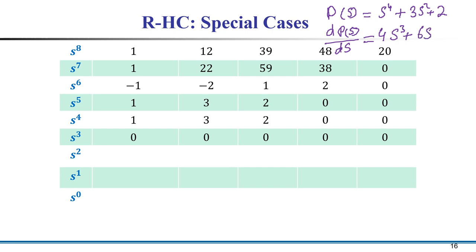We replace the zeros in the s³ row by 4 and 6. Since 2 is common between them, we can write 2 and 3. Then we proceed to calculate the next row.